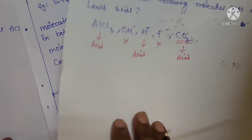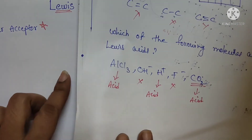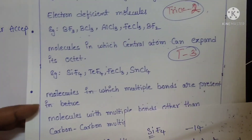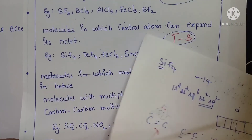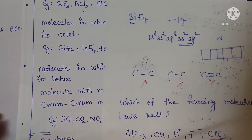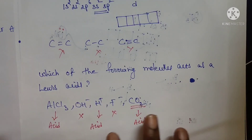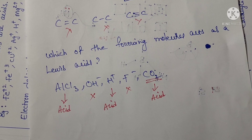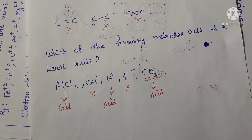Let's recall the topic: Lewis theory defines an acid as an electron pair acceptor. We discussed four tricks to identify Lewis acids, the drawbacks of the theory, and solved some example questions. Practice this. In the next class we will discuss Lewis bases. Thank you.